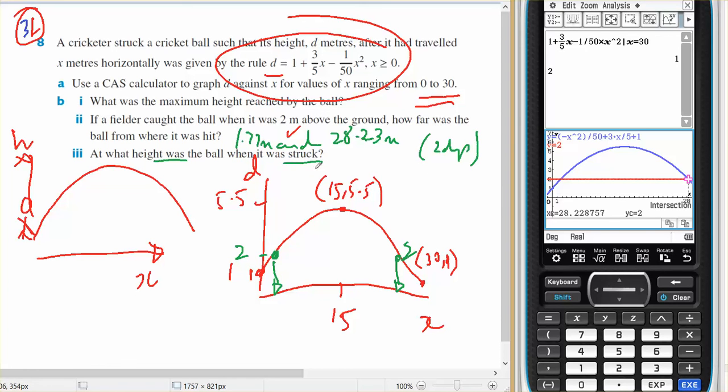At what height was the ball when it was struck? Well, when it was struck, it's going to be at height of 1 metre, because it's going to be struck at x equals 0, and if I make that 0 and that 0, the height is 1 metre.